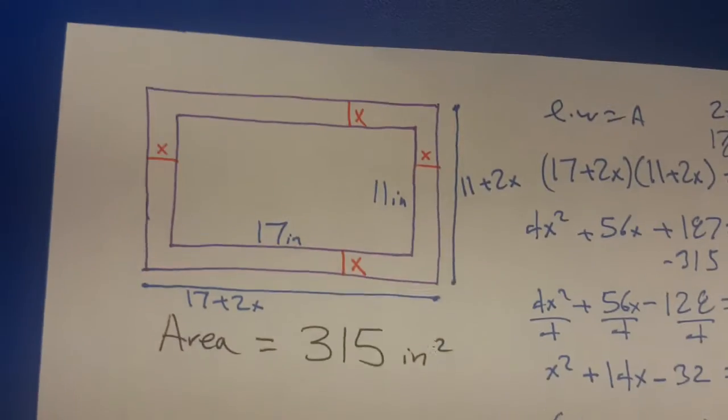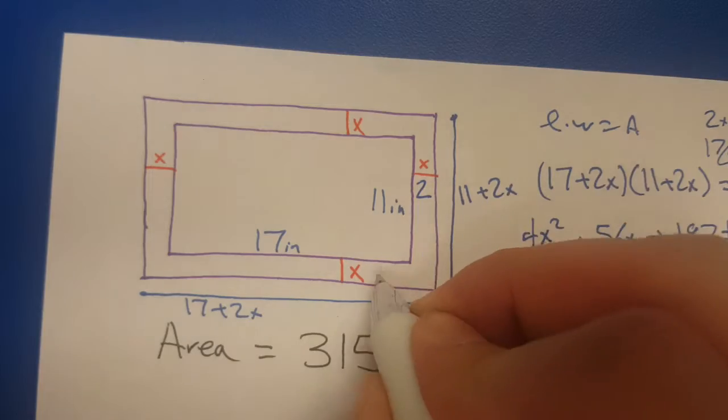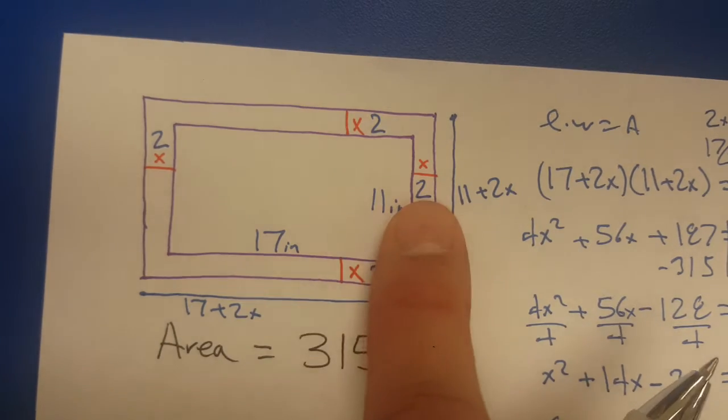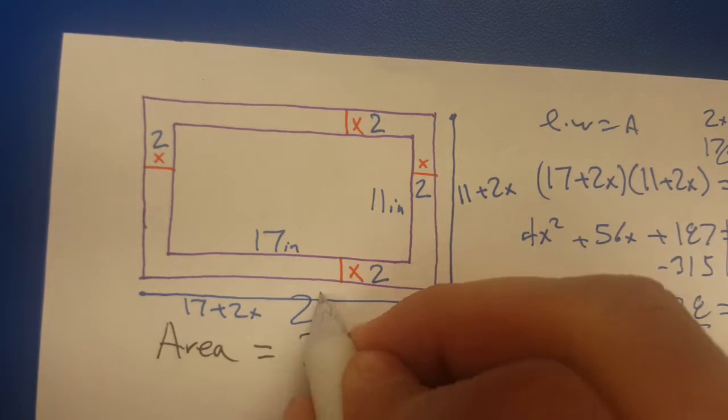So x equals 2. You're 2, you're 2, you're 2, and you're 2. It used to be 17 plus 2x, but now it's 17 plus 2 plus 2, so it's actually going to be 21 inches across this way.